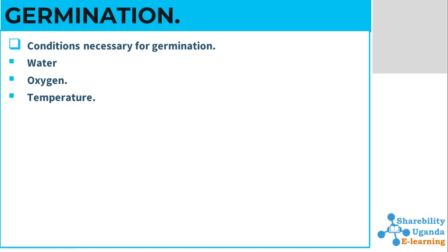Soil is also necessary for germination to take place, because we can't just put our seeds anywhere and expect them to germinate. But the most important conditions you should note are water, oxygen, and temperature — they are the most necessary conditions for germination of seeds to take place.